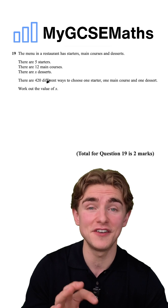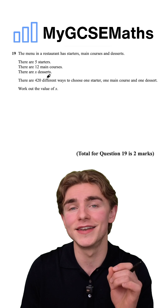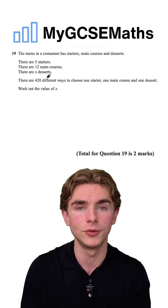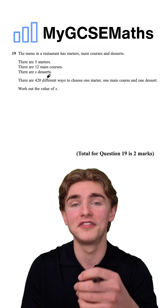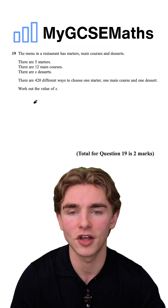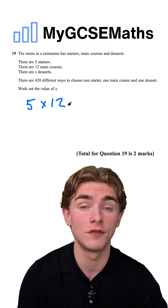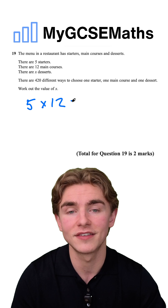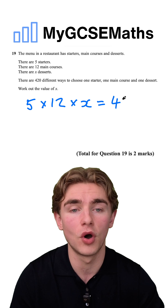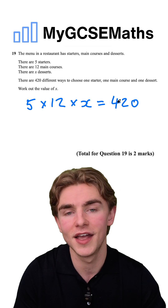What we learn is that if we have different options to choose from — so in this case starters, mains, and desserts — the number of combinations of different things that we can choose is equal to all of the number of different items multiplied by each other. So we can choose between five starters, 12 main courses, times by X the number of desserts, and we know that this is going to be equal to 420, because that's the total number of combinations that could be chosen.